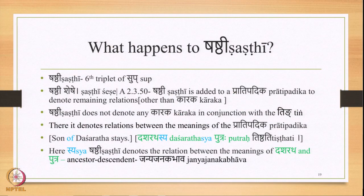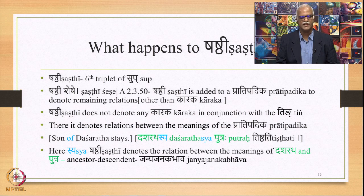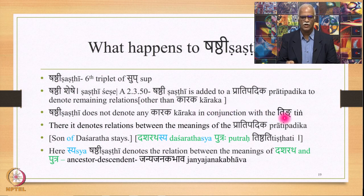What happens to the sixth triplet of Sup? What happens to Shasthi? Shasthi is the sixth triplet of Sup suffixes. The rule Sutra 2.3.50 says 'Shasthi sheshe' — Shasthi Vibhakti is added to a Pratipadika to denote remaining relations, meaning relations other than Karaka relations. Shasthi does not denote any Karaka in conjunction with the Ting. In conjunction with the Ting, it denotes the relation between the meanings of the Pratipadika.